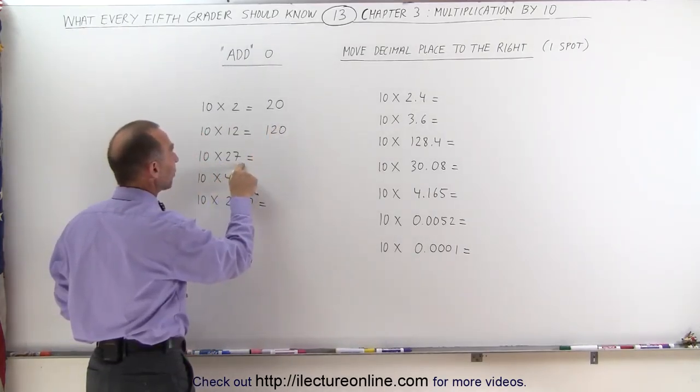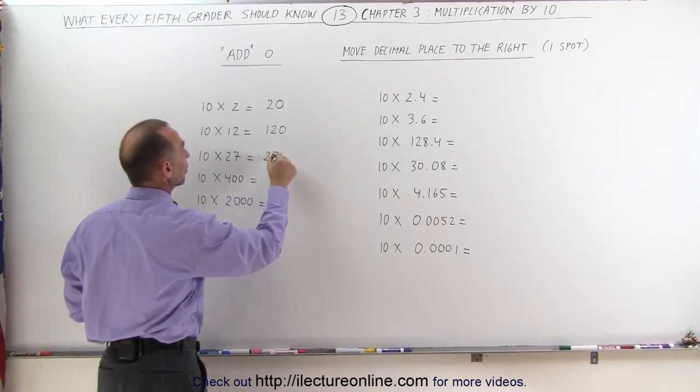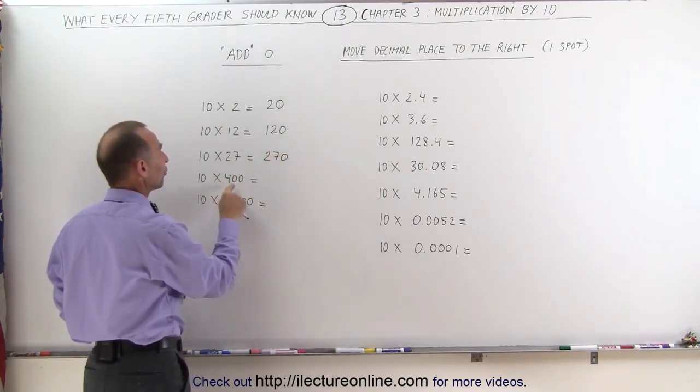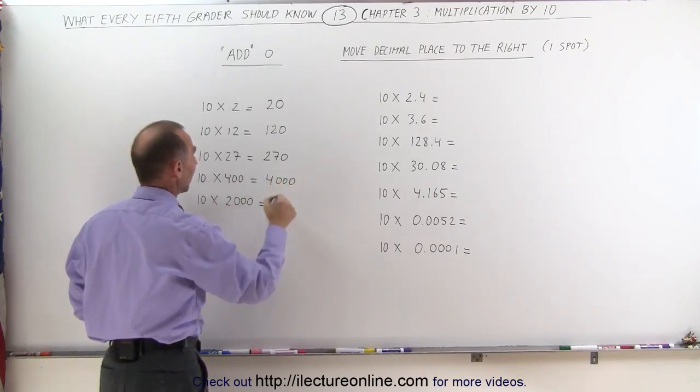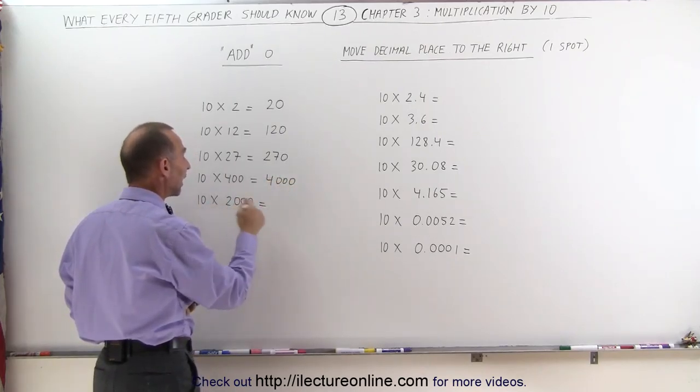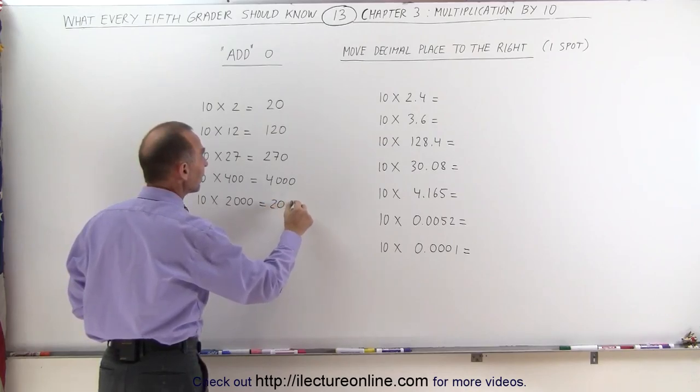10 times 27, add a zero to the 27, you get 270. 10 times 400, add a zero, you get 4,000. And 10 times 2,000, add a zero, you get 20,000.